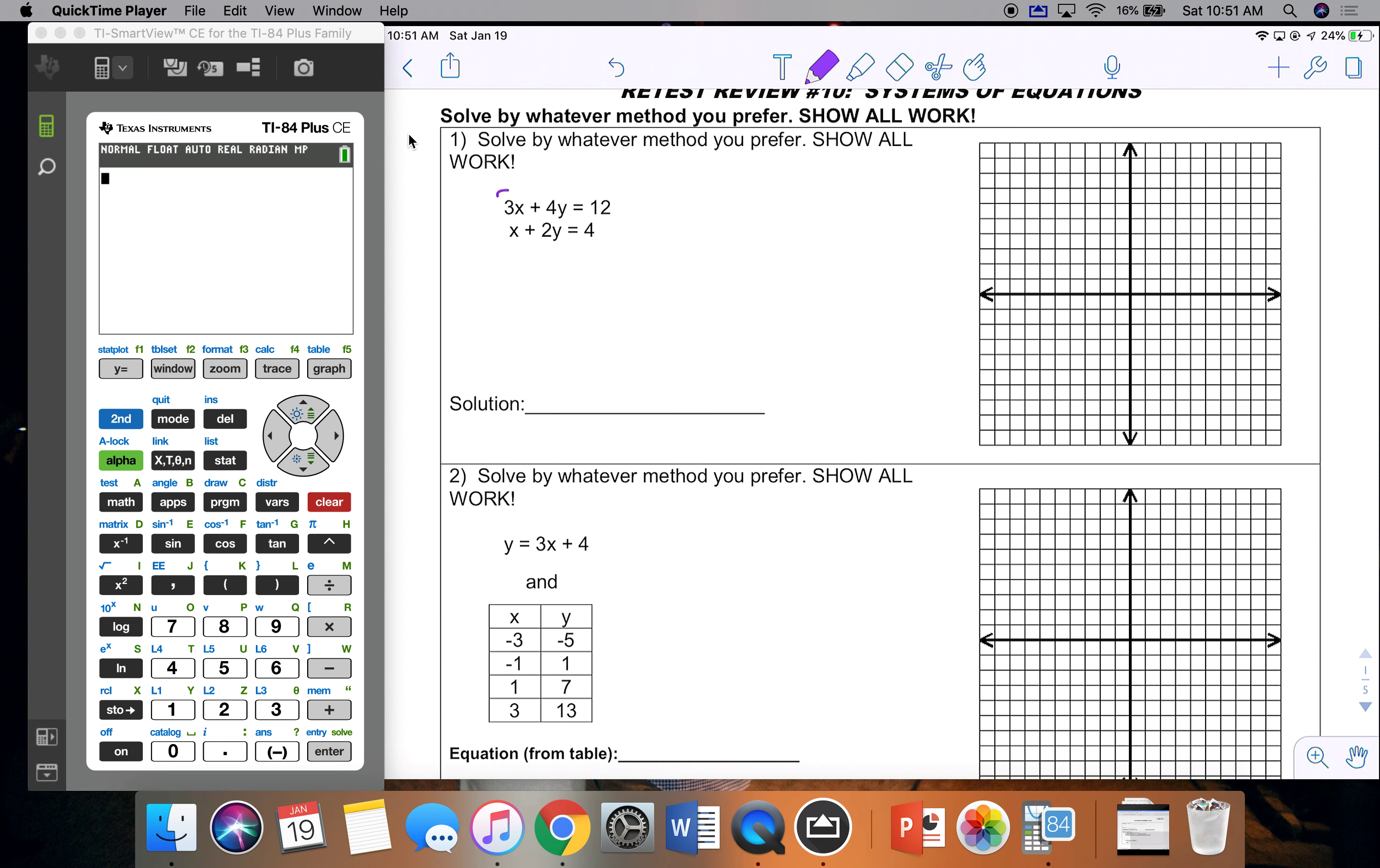So problem one, I notice my x's are aligned, my y's are aligned, and I have equal answers, which means it is set up for matrices. So I can go 3, 1, 4, 2, 12, 4, and then plug that into my calculator.